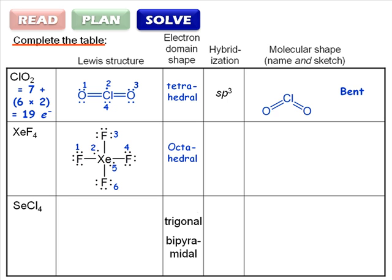If there are 6 electron domains, then xenon needs 6 hybridized orbitals. We'll need 6 atomic orbitals to hybridize. 1s, 3p, and 2d. That will give us sp3d2 hybridized orbitals.